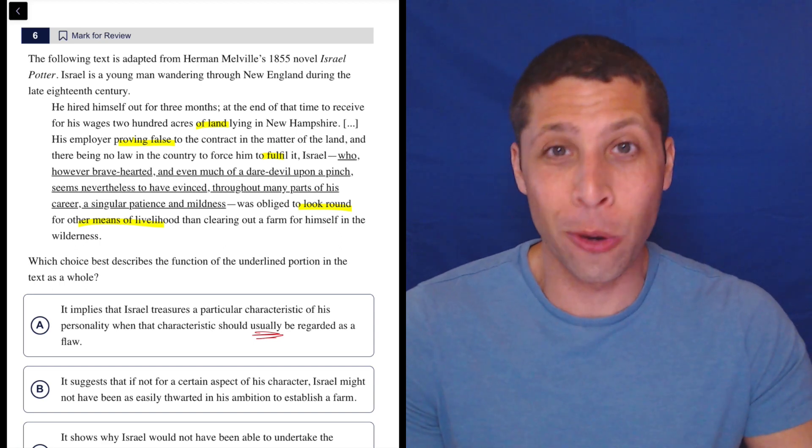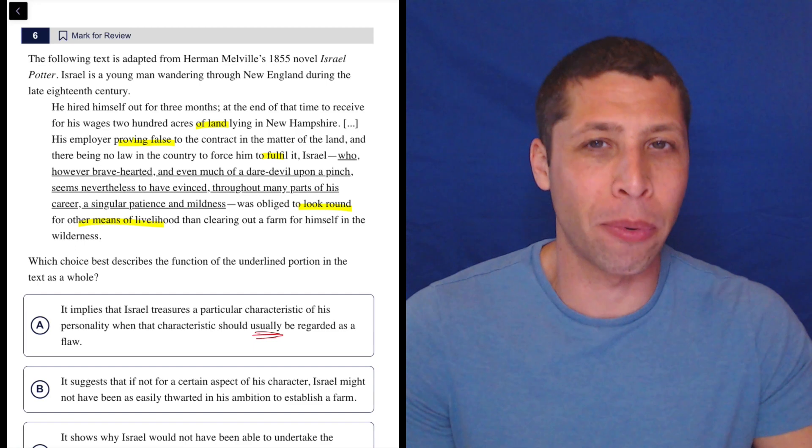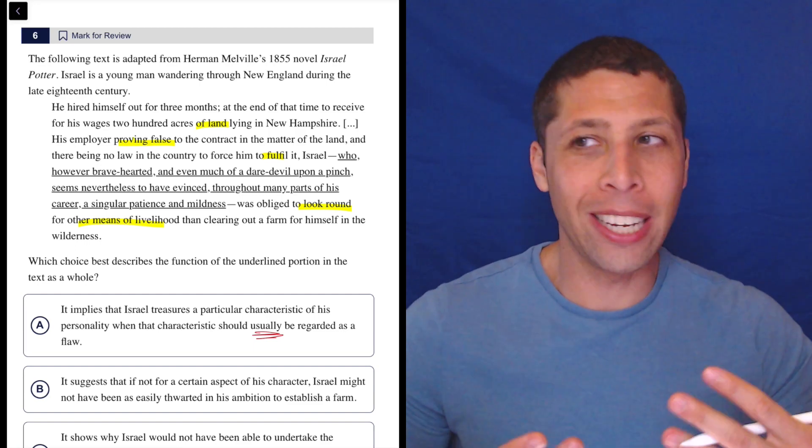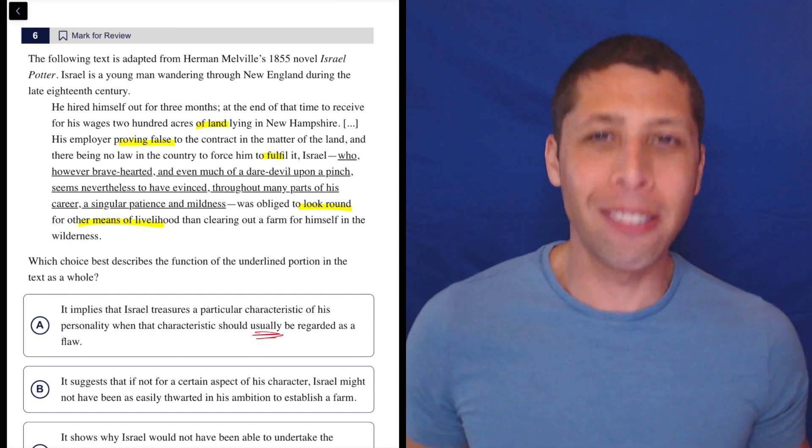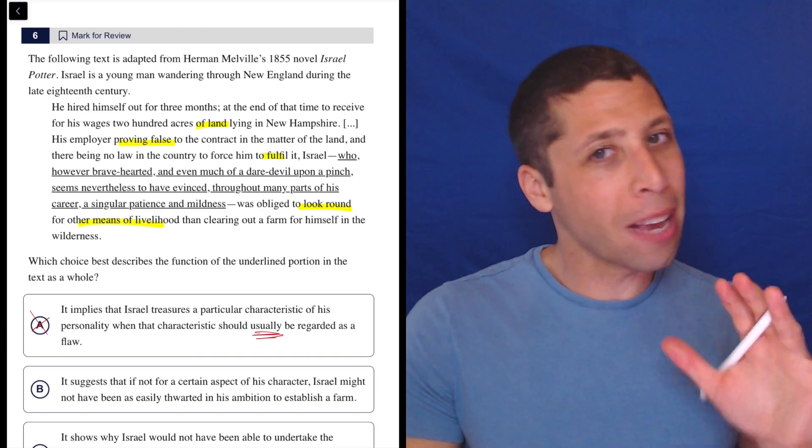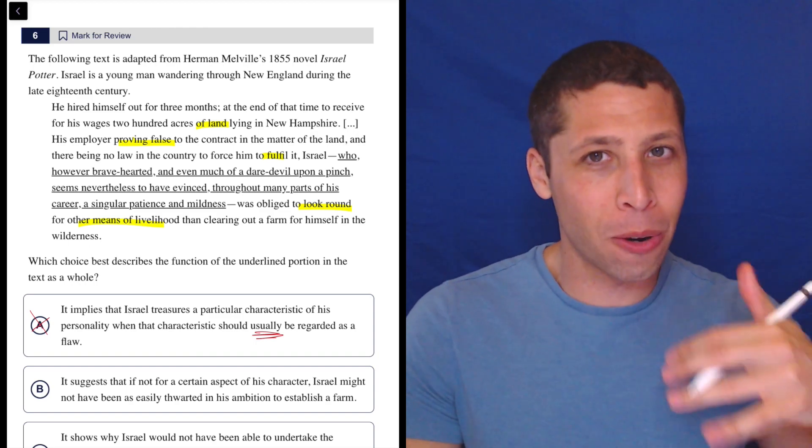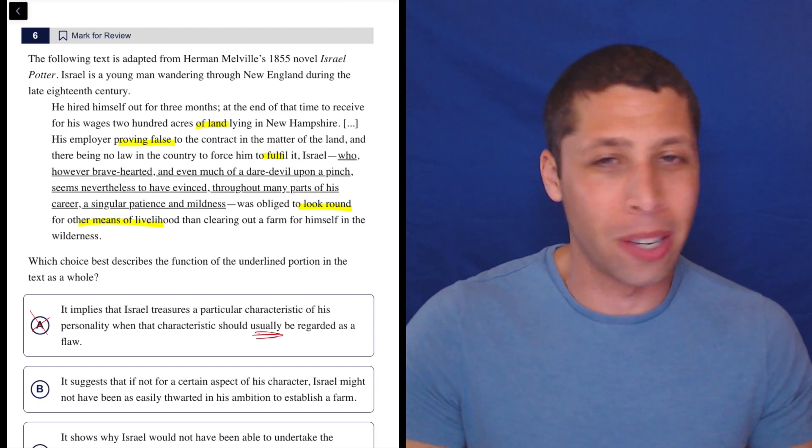And that's the key too, right? Who's to say what's usually a flaw and what isn't? That's a claim that would require really a lot of evidence to prove. We're not allowed to bring in our outside opinions of what personality traits are good and bad. So this choice, I can't point to anything in the passage, but also I feel like I have to go out of the passage in order to even consider this choice. And that's not a good sign.